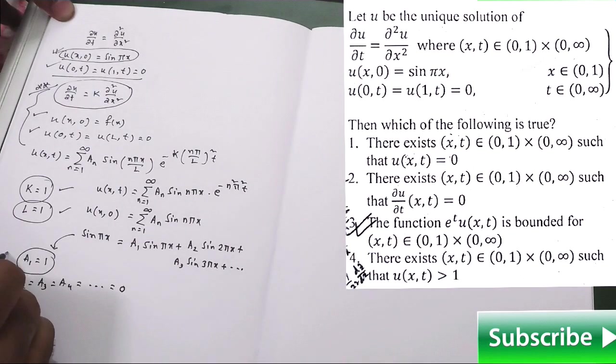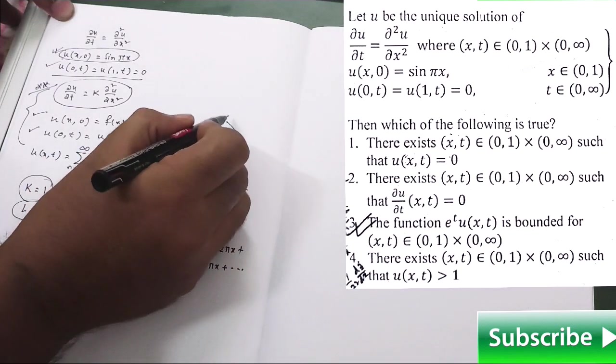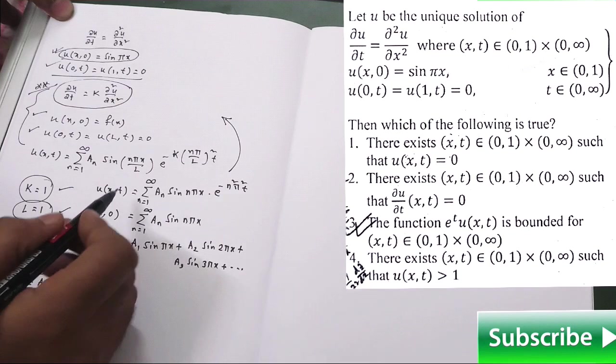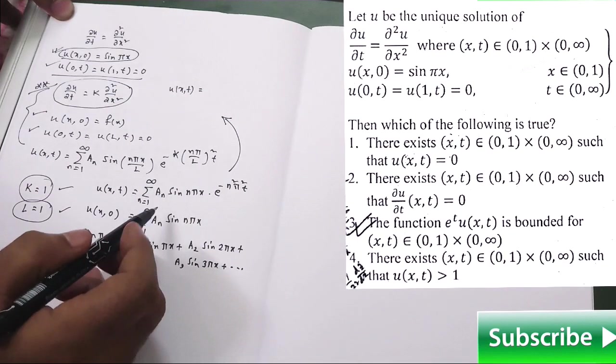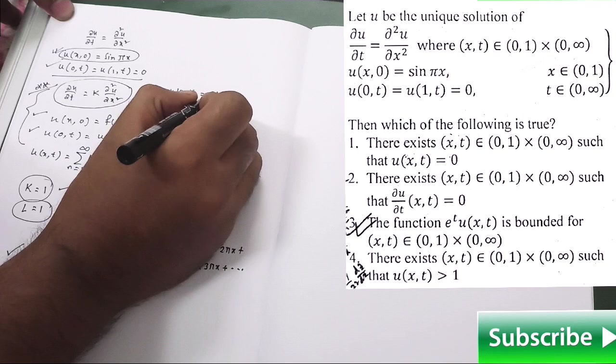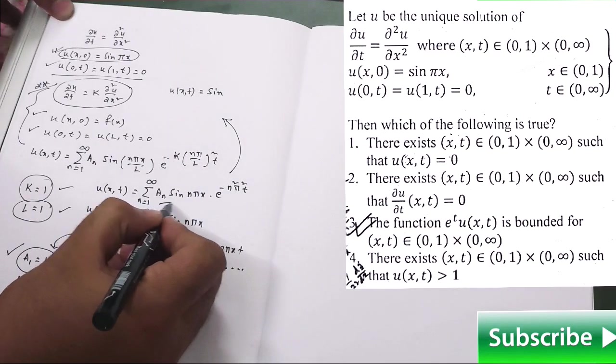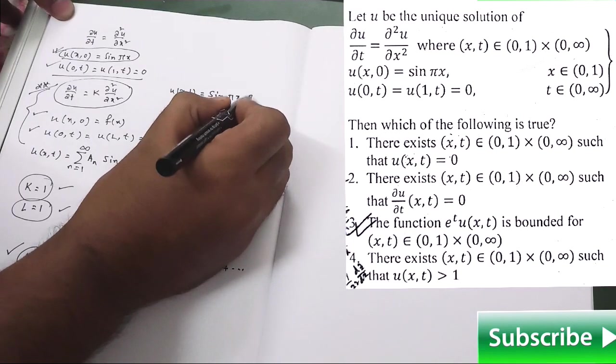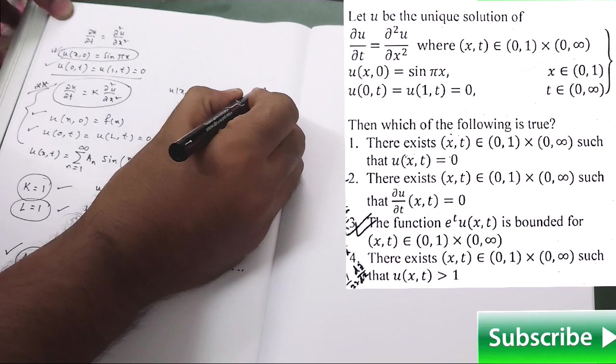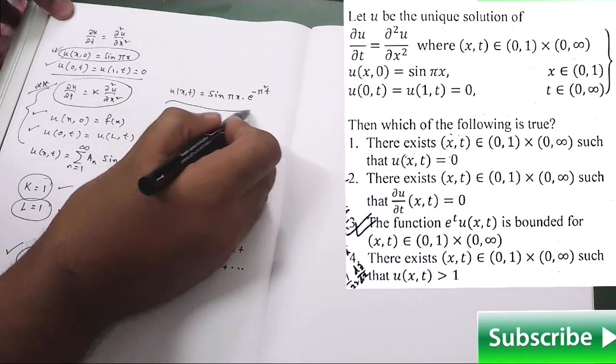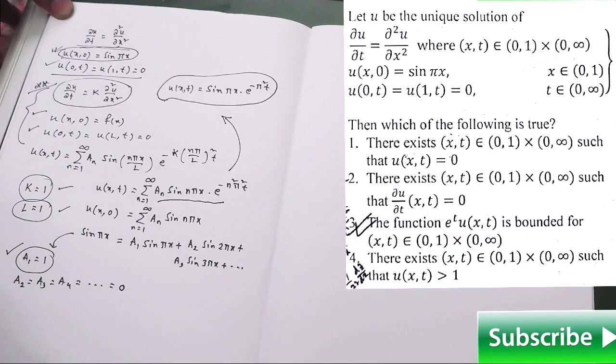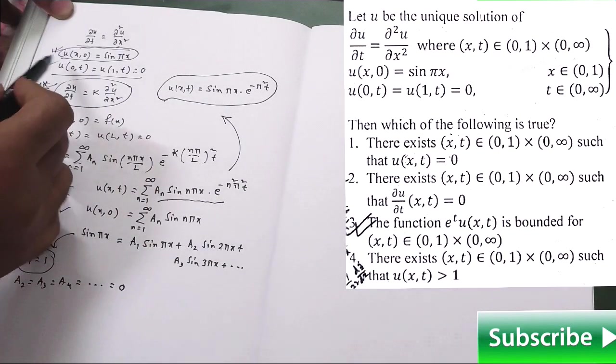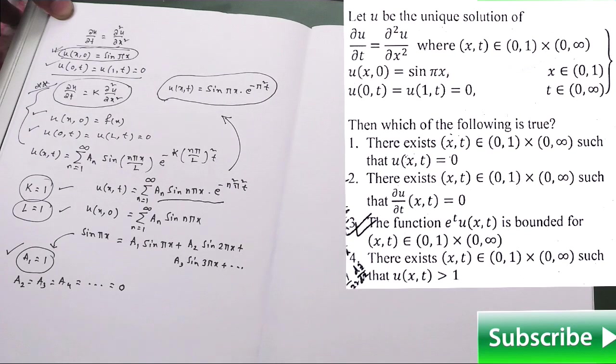That means you are getting a_1 is equal to 1. So finally, your u(x,t) turns out to be u(x,t) is equal to only a_1 will be there and rest of the terms will be 0. So finally, what you are getting from this expression is sin(πx) into e to the power minus π² into t. So this is your final solution of the given heat equation. You can easily verify that it is satisfying all the given boundary and initial condition.